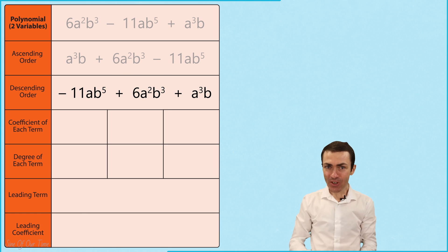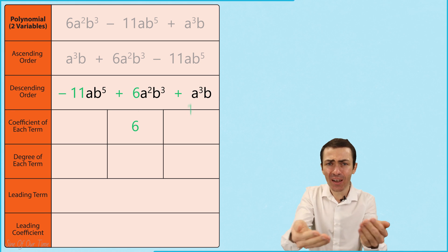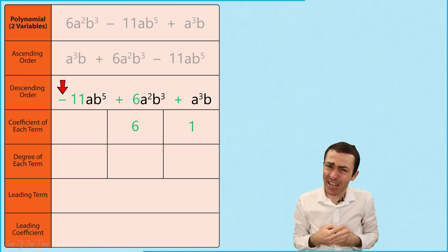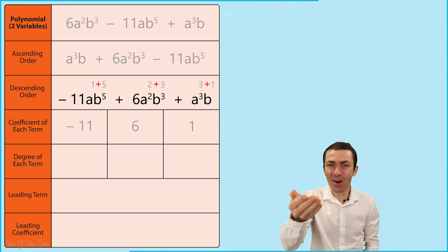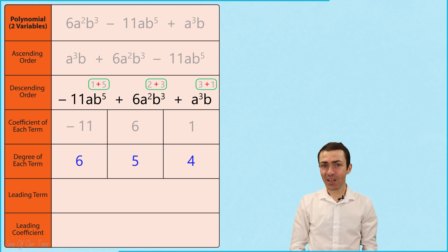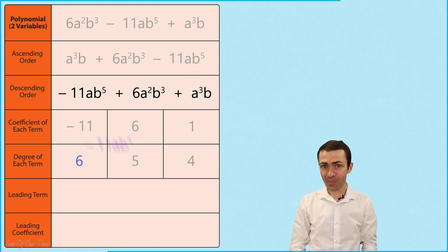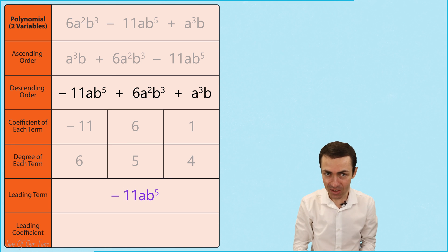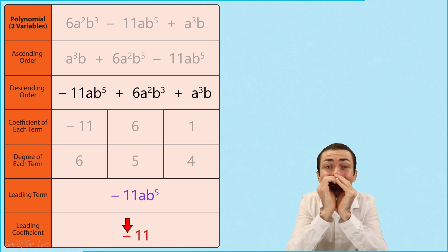Again, the coefficient of each term is just the number that appears before the variables. And please don't forget any negative signs. The degree of each term is just the sum of the exponents of the variables of each term. The leading term is the one that contains the highest degree. And finally, the leading coefficient is the coefficient of that leading term. And don't forget the negative sign.